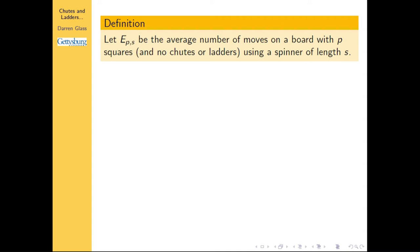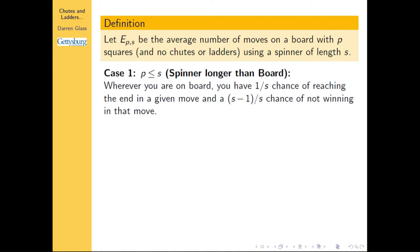We define a function E(p, s) to be the expected number of moves it will take you if you spin a spinner of length s on a board of length p — how long will it take you to reach the top? The first observation is: if the spinner is longer than the board — say a spinner from 1 to 110 on a board of length 100 — then on any given spin, you have a 1/s chance of reaching that final square.